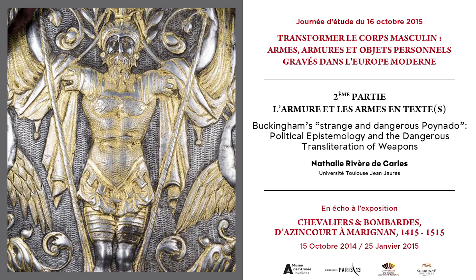The dagger was used by both the victim and his assassin. Buckingham tried to use the first dagger as a propagandist's object of self-aggrandizement, while Felton used it to punish what he thought was Buckingham's tyrannical treachery. The dagger changed hands, but also changed forms, and seemed to play a defining role in the political ontology of Buckingham.